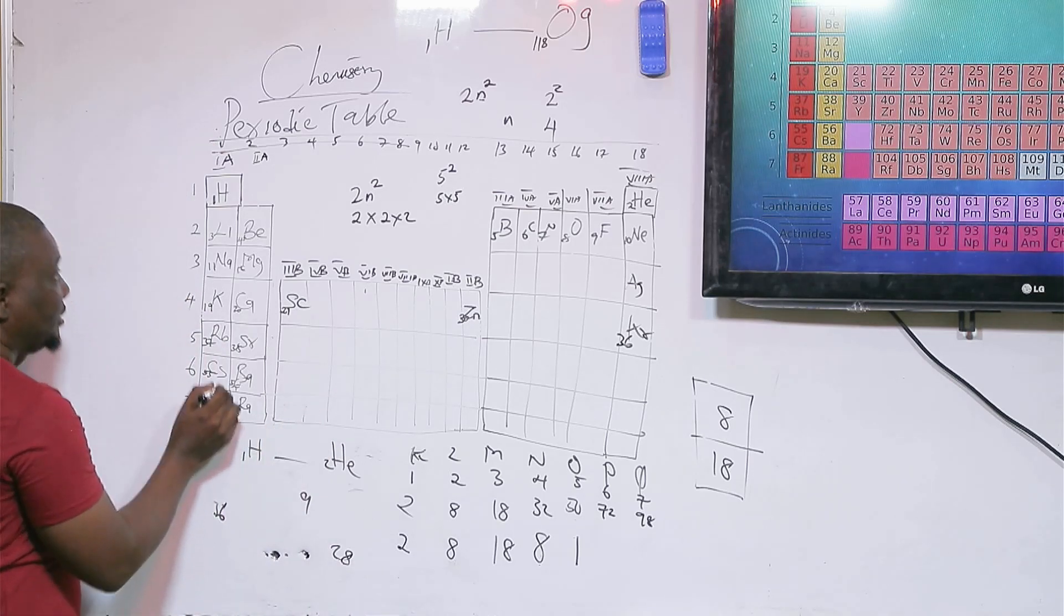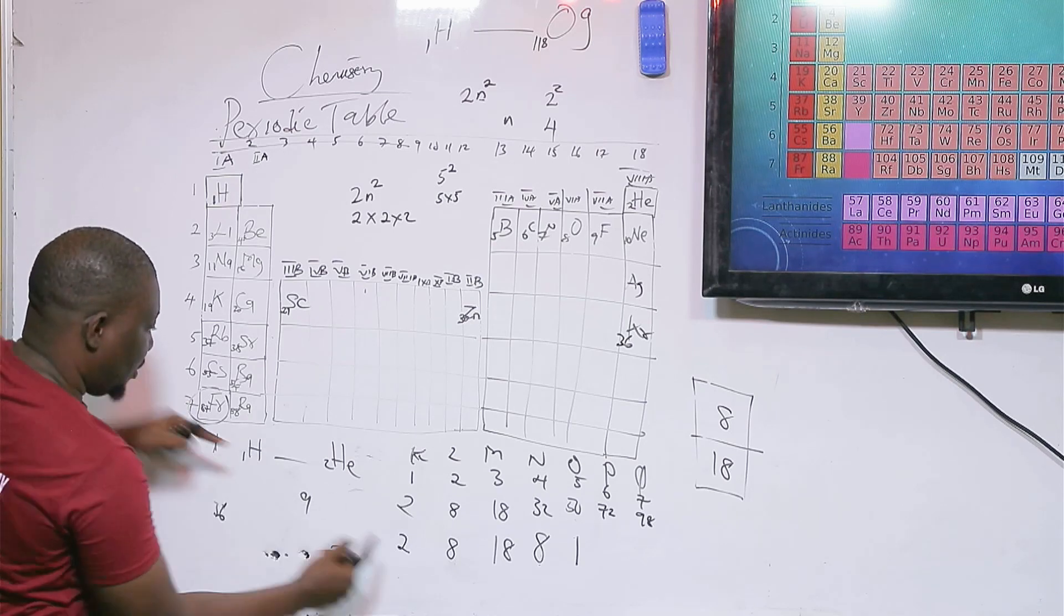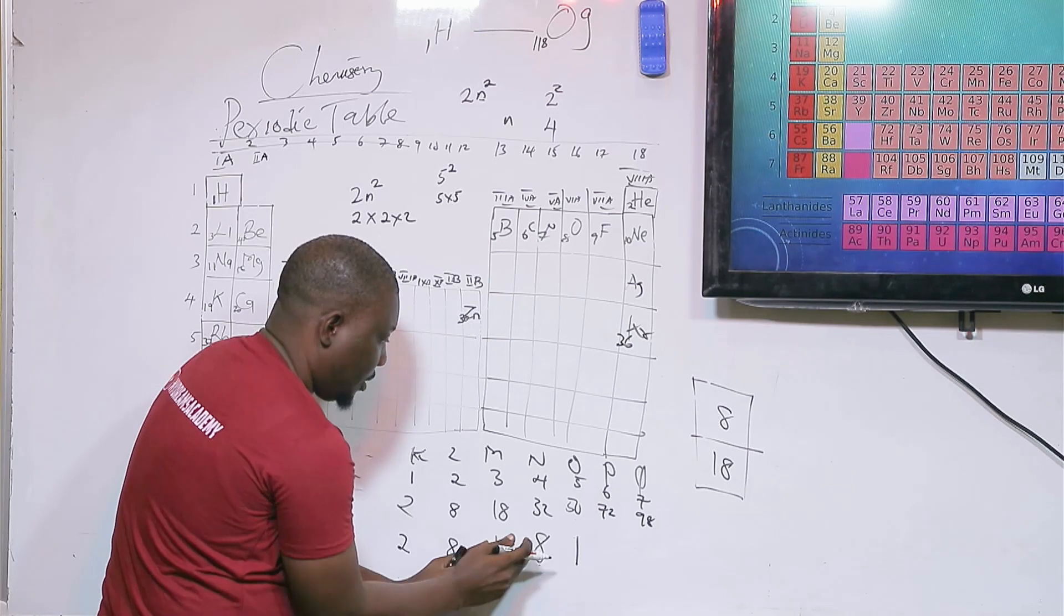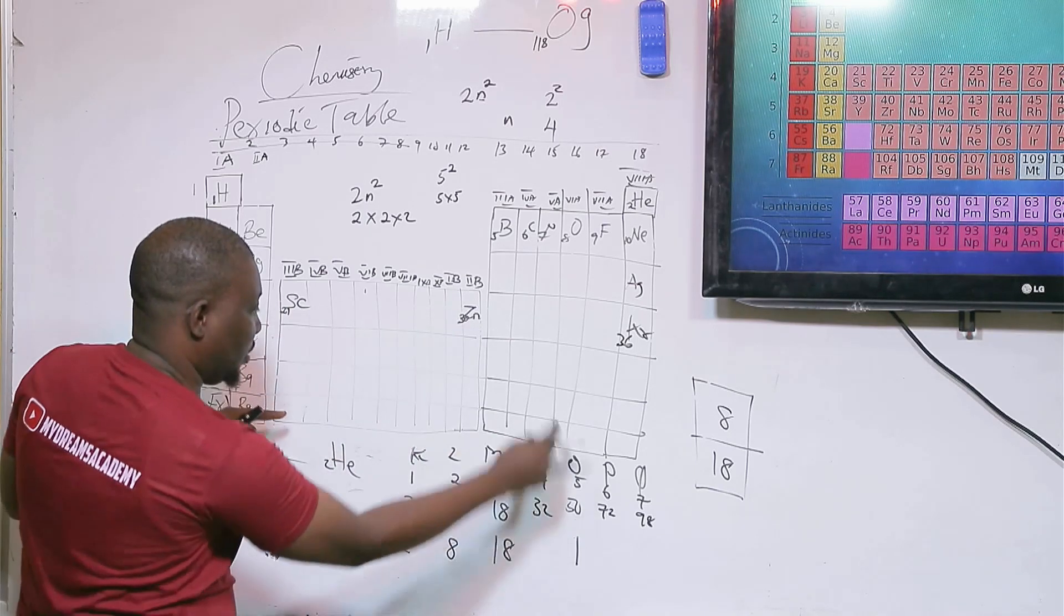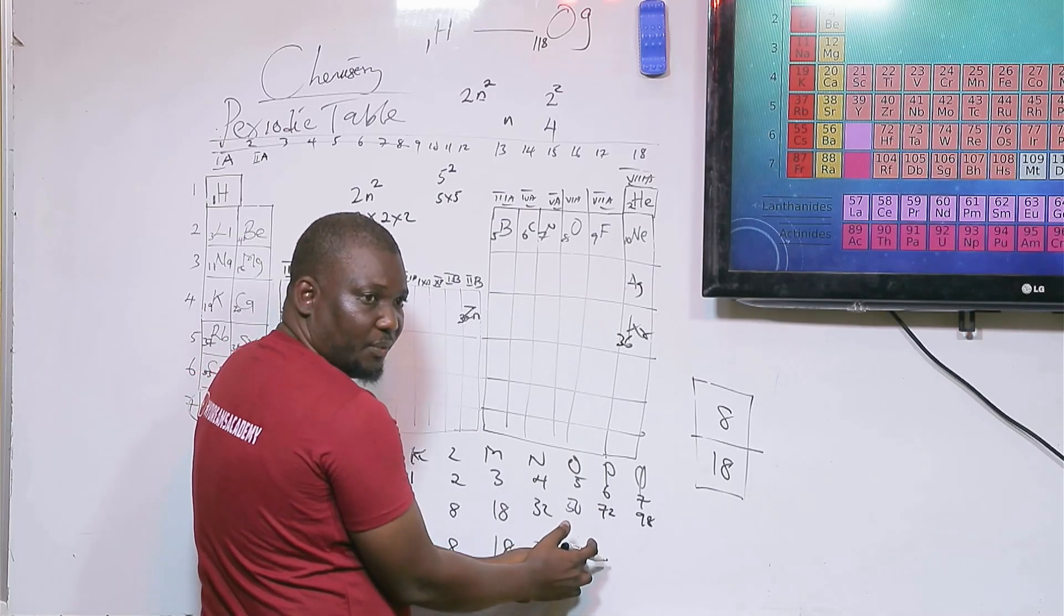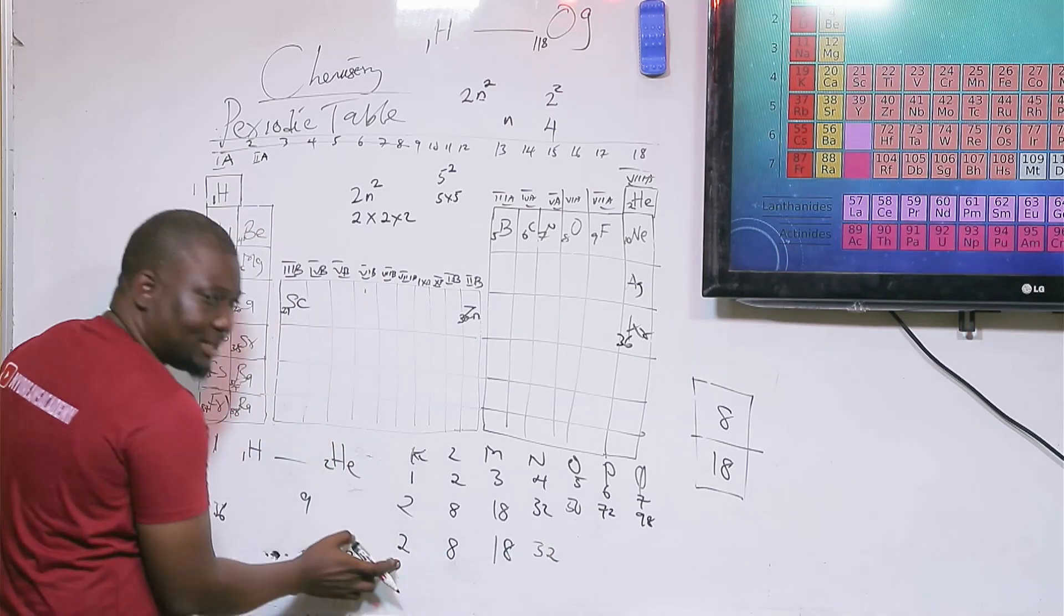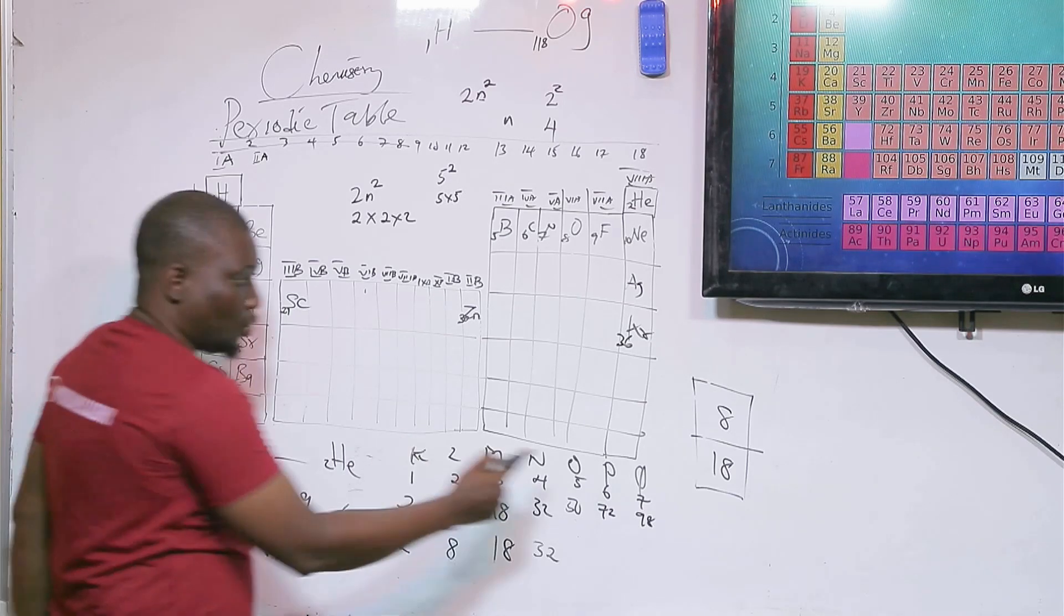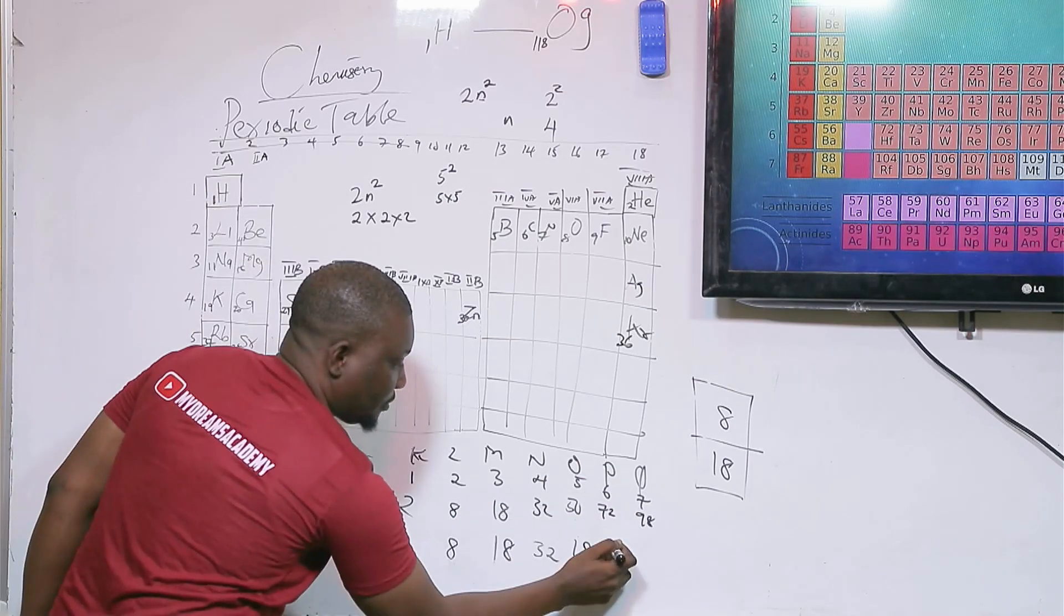Let's consider francium and see why it is in period 7. This is 87. The configuration is 2, 8, 18, 18. By the time you go around, this shell can hold up to 32. When you add these up, you have 60. 87 minus 60 is 27. Which one is closest, 8 or 18? What goes is 18, remainder is 9. What goes is 8, remainder is 1.